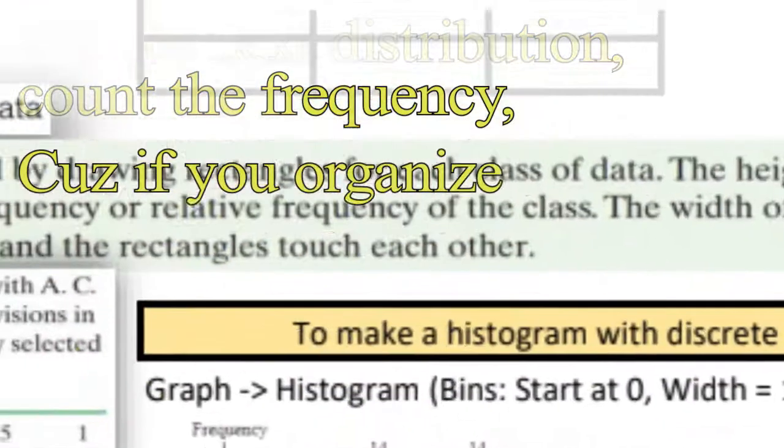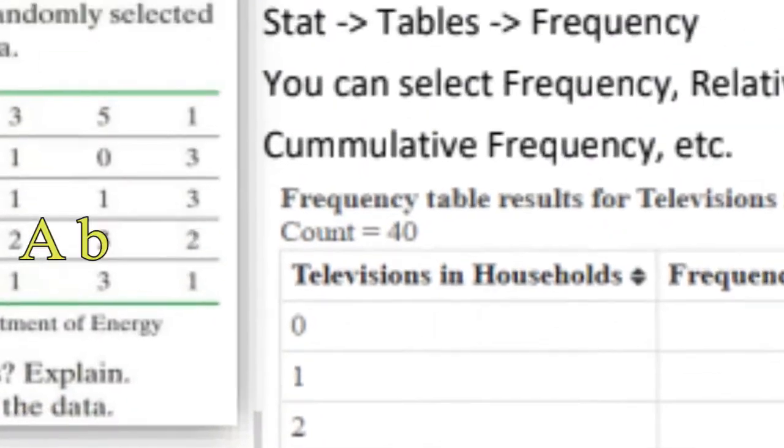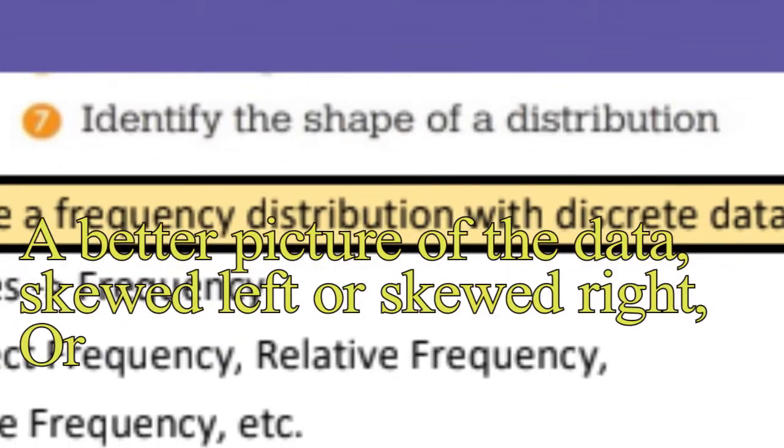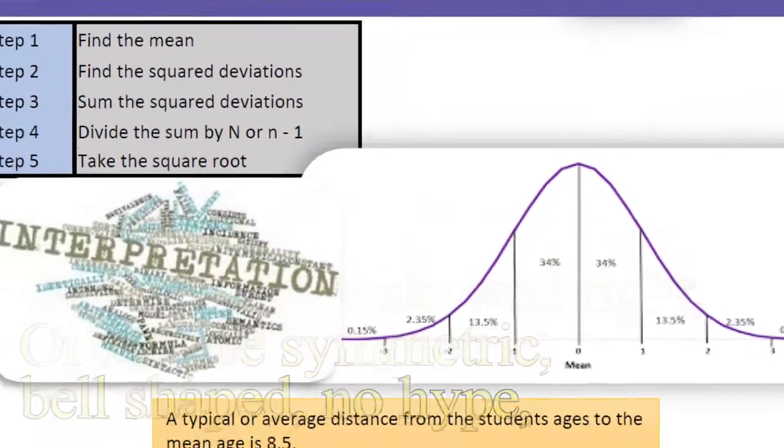For the next distribution, count the frequency, cause if you organize the data, it'll help you to see a better picture of the data, skewed left or skewed right, or maybe symmetric bell shape, no hype.